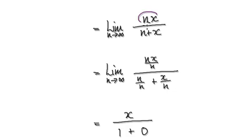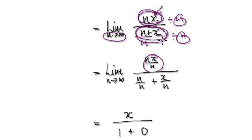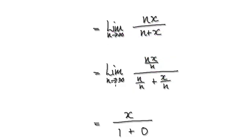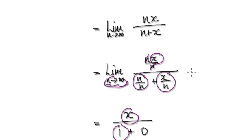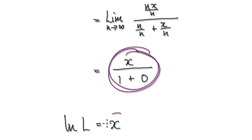Now we evaluate the limit of this expression. Here you've got one bubble divided by another, so divide top and bottom by n. Remember, n is what's moving; x is a constant. Dividing gives these two simplified terms. As n tends towards infinity, those terms cancel giving x in the numerator, and the denominator becomes 1. So the limit equals x.